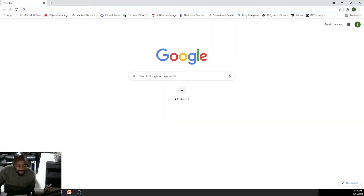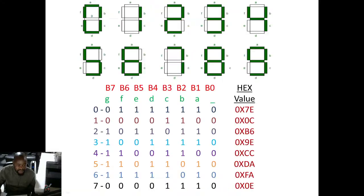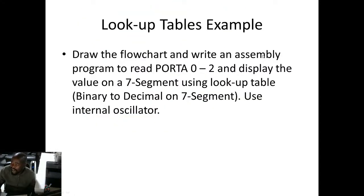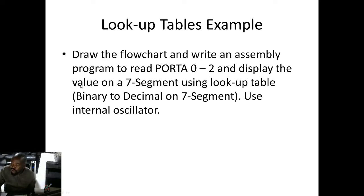Let's get back to the problem. It says draw the flowchart and write an assembly program to read port A0 to A2 and display the value on the 7-segment using a lookup table. We want to configure A0 to A2 as inputs, outputs on port B because the 7-segment is connected there, and we also want to disable analogs so we can use those pins as digital pins.